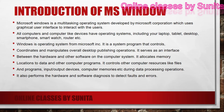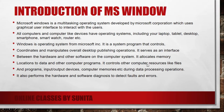If we don't have a GUI or operating system, we can't work on any computer, laptop, etc. When the operating system is installed, Windows — as an operating system from Microsoft — is a system program that controls, coordinates, and manipulates overall desktop publishing operations. It serves as an interface between the hardware and other software on the computer system. It allocates memory locations to data and other programs, and controls computer resources like files, programs, input devices, and computer memory during data processing.